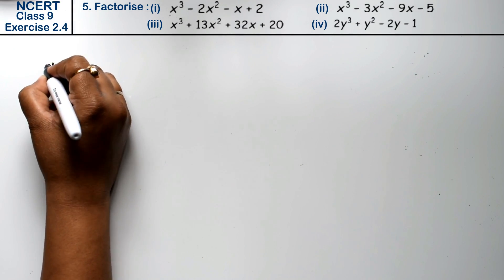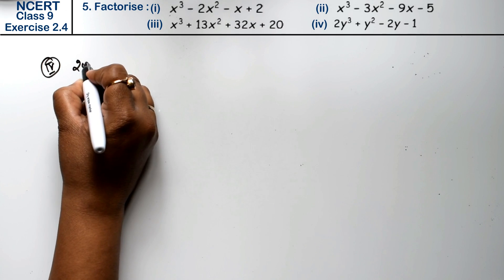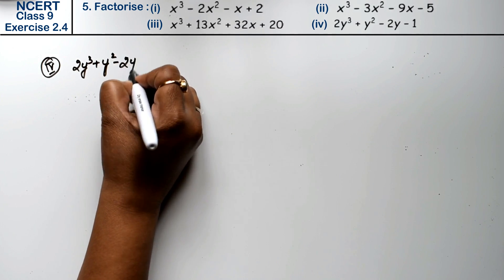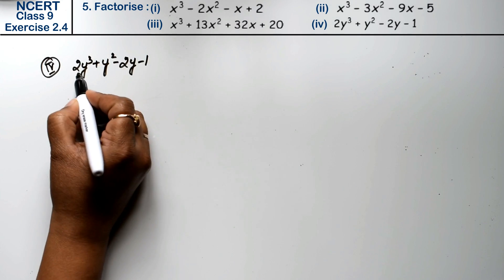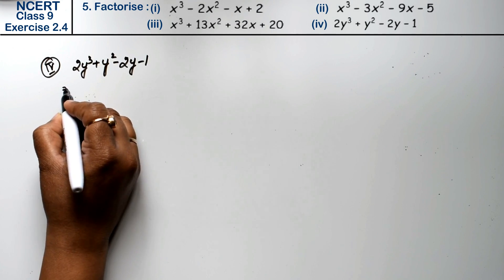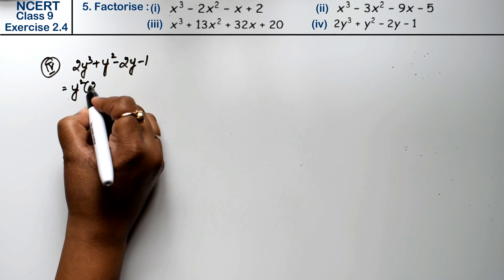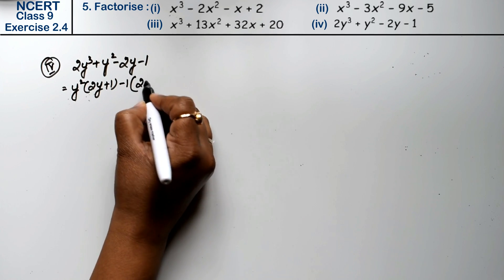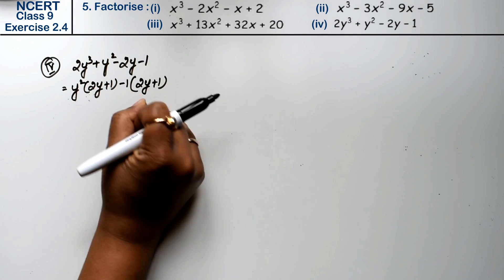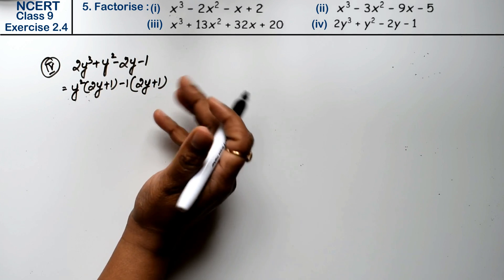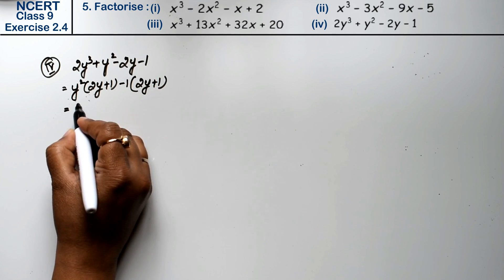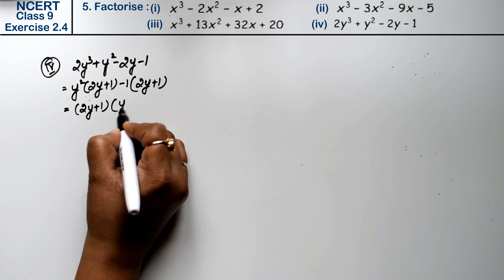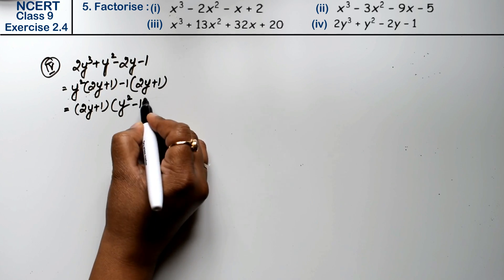Let's do the fourth part. The fourth part is 2y cubed plus y squared minus 2y minus 1. If you look at this, y squared is common from the first two terms. Taking y squared common gives 2y plus 1. From the last two terms, taking minus 1 common gives 2y plus 1. So 2y plus 1 is common.